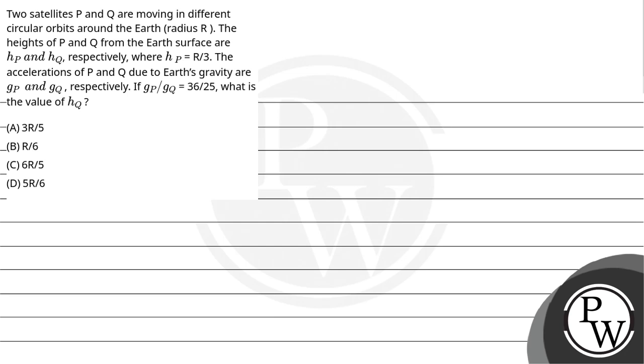Hello, let us read the question. Two satellites P and Q are moving in different circular orbits around the earth. The height of P and Q from the earth surface are HP and HQ respectively, where HP is equal to R by 3.